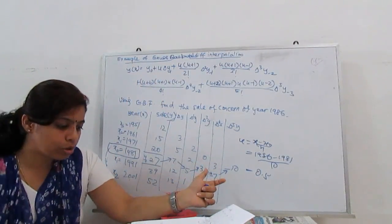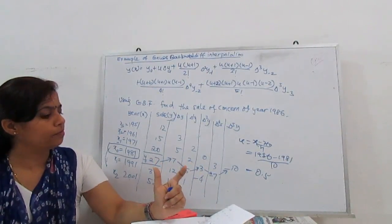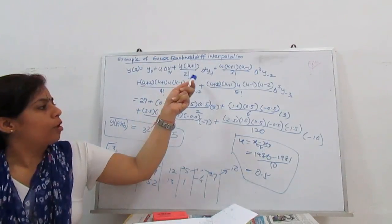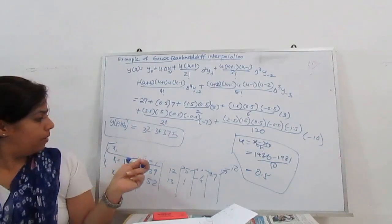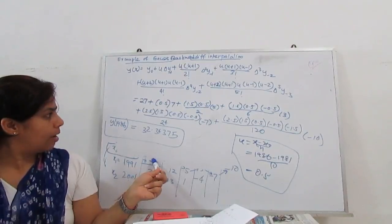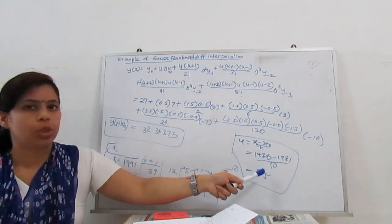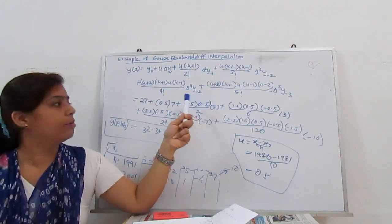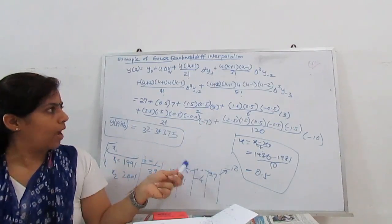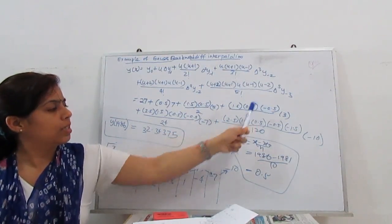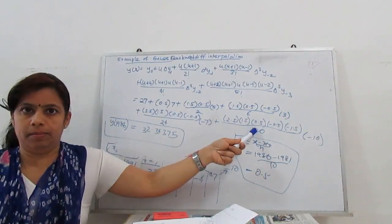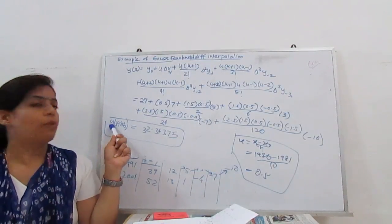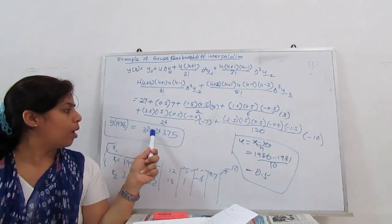Substituting into the Gauss backward formula: y₀ = 27, u = 0.5, Δy₋₁ = 7, u(u+1)/2! · Δ²y₋₁ = (0.5)(1.5)/2 · 5, and continuing with u(u+1)(u−1)/3! · Δ³, and so on for all terms. When we substitute all the values and simplify, we get y(1986) = 32.34375.